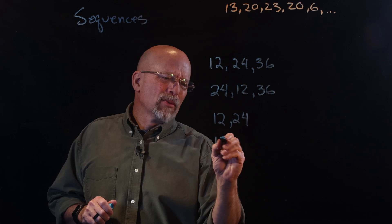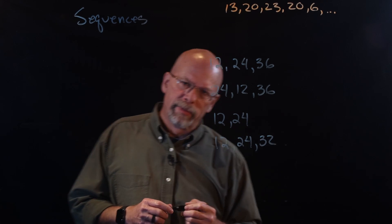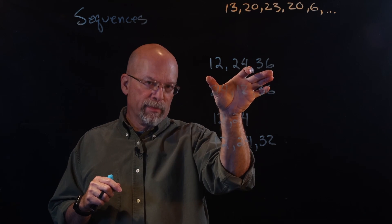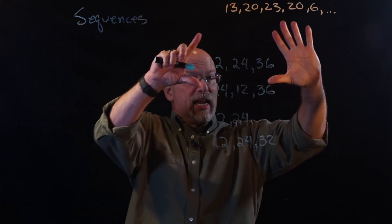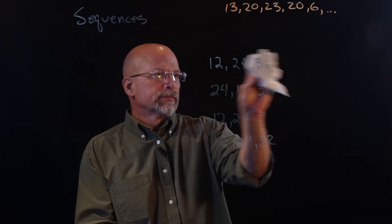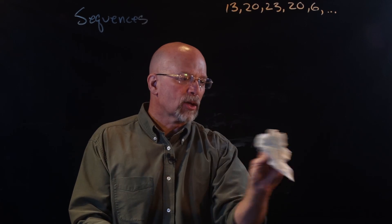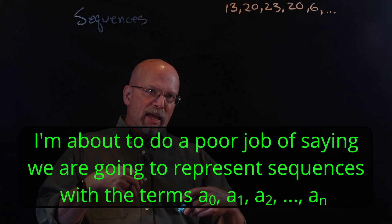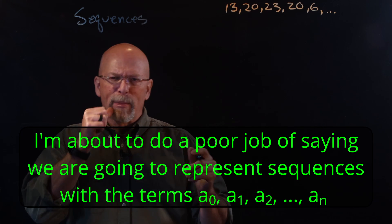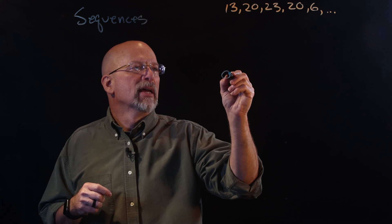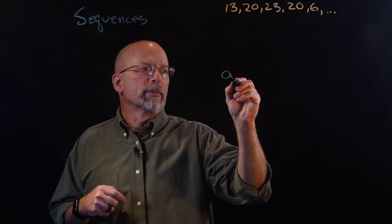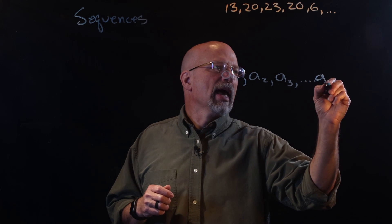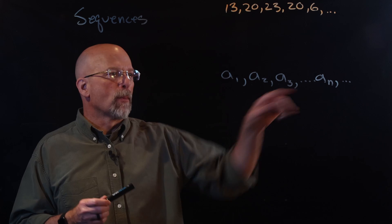What if we had twelve, twenty-four, thirty-two? That sequence will not open the lock either. When we're talking about a sequence, we're talking about exactly the same numbers in exactly the same order, and if it's finite, exactly the proper number of them. When representing a sequence, I'm going to use the letter a with a subscript — a one, a two, a three, and so forth, up to a sub n, and if it's infinite we go past a sub n.